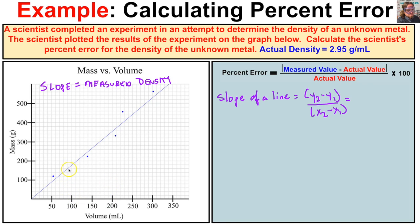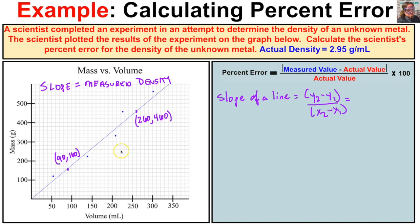If we take a look, we can see a point right here that crosses the graph paper perfectly. We're going to call this point 90 on the x-axis and 160 on the y-axis. Now let's find a second point — there's one right here that intersects the graph paper pretty close to perfectly. This point is going to be 260 on the x-axis and 460 on the y-axis.